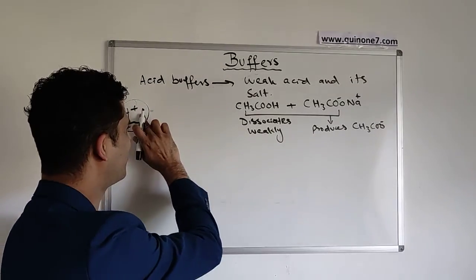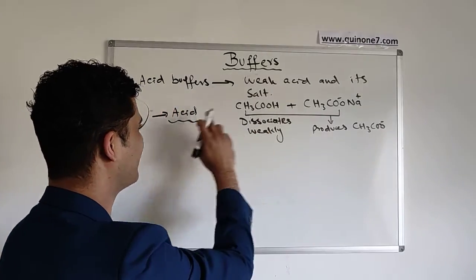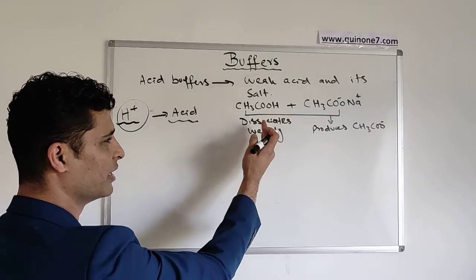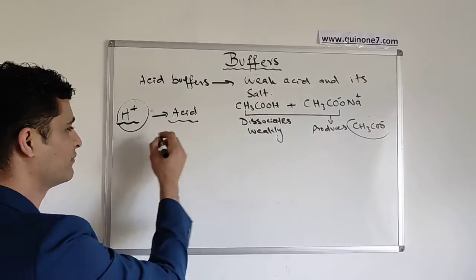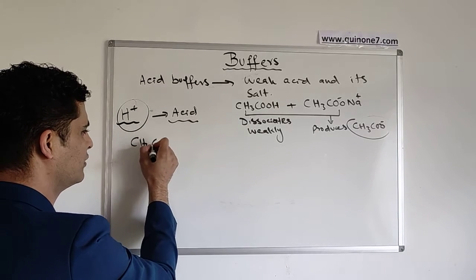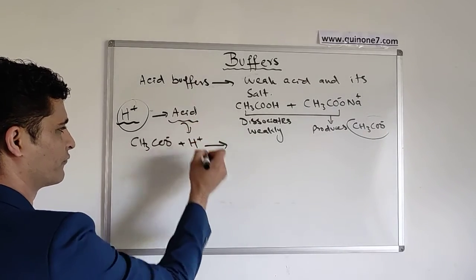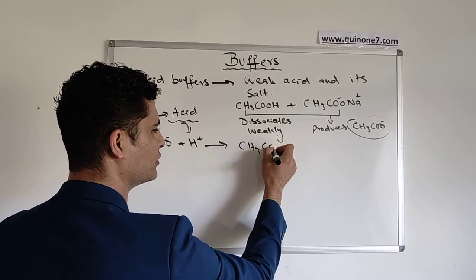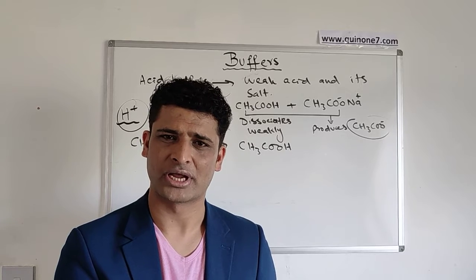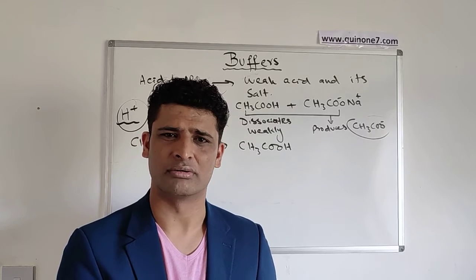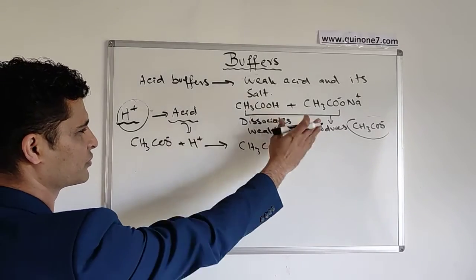If you are adding H⁺ ions, that means you are adding an acid into the solution. One of the buffer components has to tackle this H⁺ ion which is causing the change in pH. The acetate ion, or ethanoate ion, will react with the H⁺ ion to reduce the effect of the pH change. So CH₃COO⁻ reacts with H⁺ to produce CH₃COOH. This won't make much difference to the concentration of the ethanoate ion, because you always have a high concentration of the salt in the buffer.